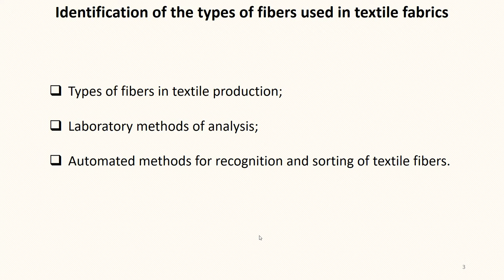In automated systems, optical methods such as microscopic, image recognition in digital images, spectral, multispectral and hyperspectral methods are more commonly used for recognition. The use of digital imaging methods has the main disadvantage that the accuracy of textile fiber recognition is significantly influenced by the fabric dyes used. In spectral methods, the staining of textile fabrics does not significantly affect the recognition accuracy. In some cases, densely applied colorant, as well as darker colors, to some extent affect this recognition.